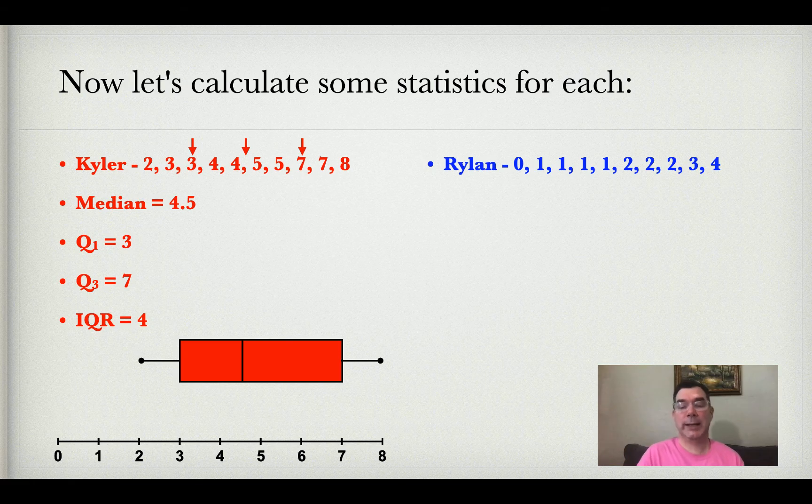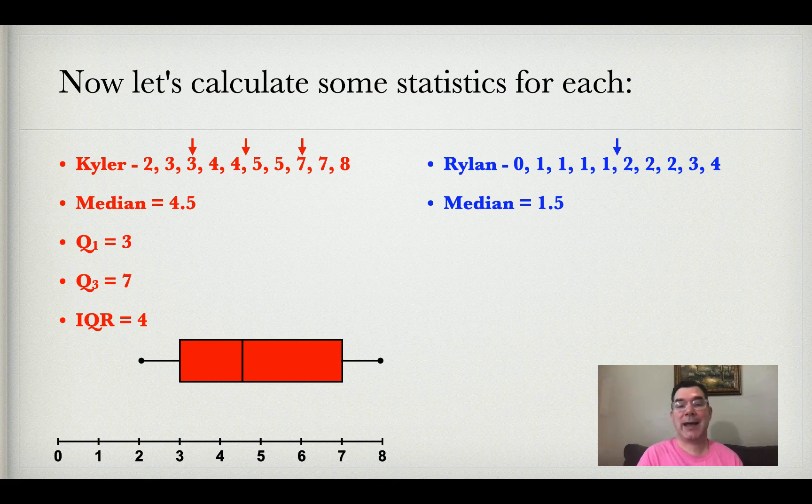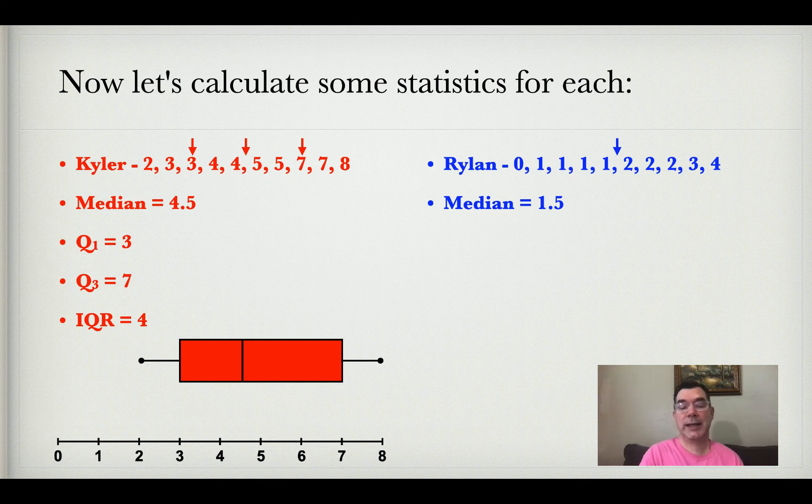Doing the same thing for Rylan, there's Rylan's list of numbers, also a list of 10 numbers. The median is the average of the fifth and sixth numbers, the average of one and two, which is 1.5.